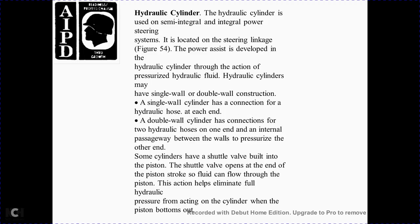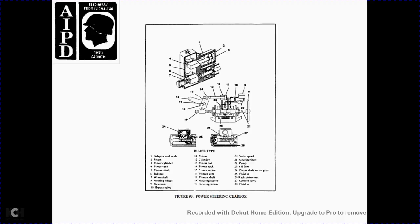Figure 53 shows the components of the power steering box. Hydraulic cylinders used in semi-integral and integral power systems are located within the steering linkage, as shown in Figure 54. In the power assist system, pressure develops in the hydraulic cylinder through hydraulic fluid action. Hydraulic cylinders have single wall and double wall construction. A single wall cylinder has a hydraulic hose connection at each end. A double wall cylinder has two hydraulic hose connections on each end with an integral passageway between the walls. A cylinder shuttle valve opens for one end of the piston, allowing fluid to flow through the piston, which eliminates full hydraulic pressure from acting on the cylinder when the piston bottoms out.